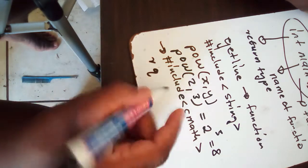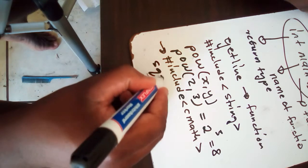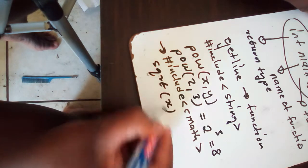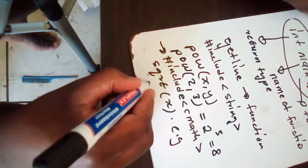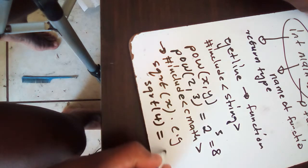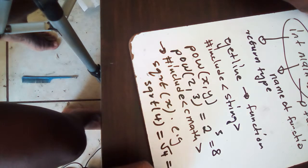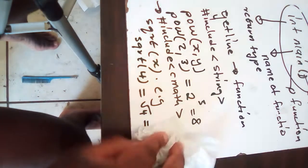For power, there are some of them you can use. Square root, we call it square root of x. For example, if you say square root of 4, this is going to give you answer of 2. It also uses the cmath function.